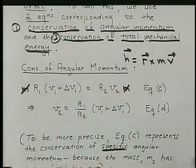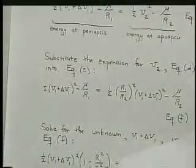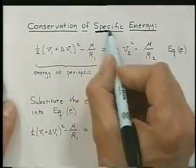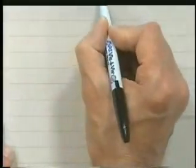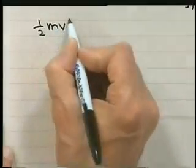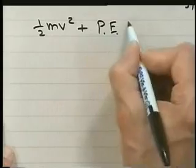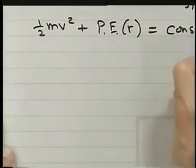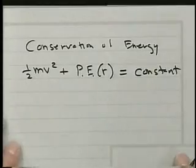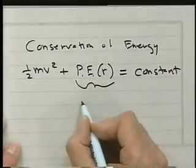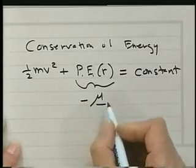So we'll use that equation in the conservation of energy. The conservation of, to be more precise, specific energy because we also canceled out the mass here. Before we write it that way, let me just say that, in general, conservation of energy, of total mechanical energy, is one-half MV squared plus the potential energy, which can be a function of R, equals a constant.